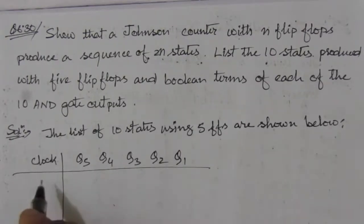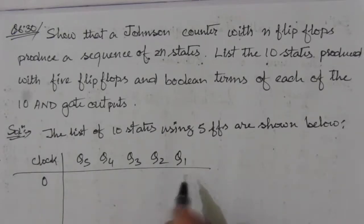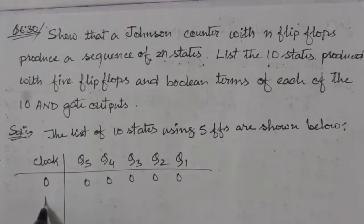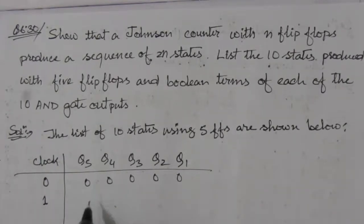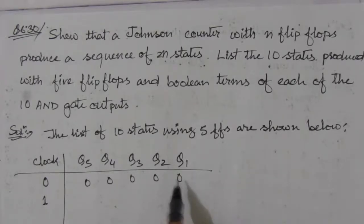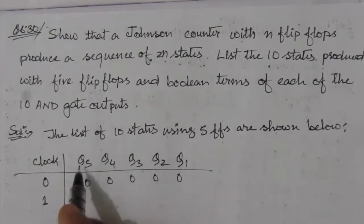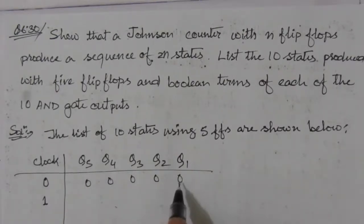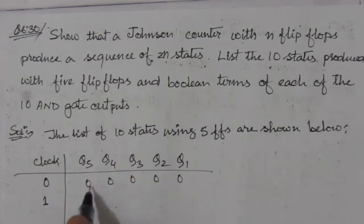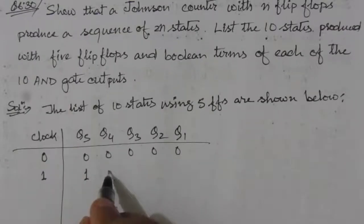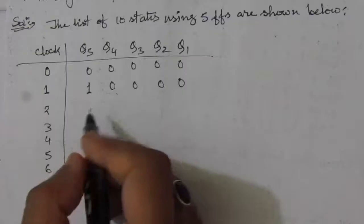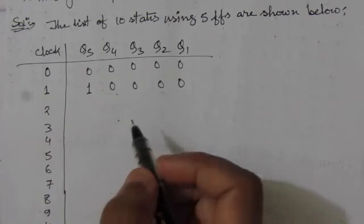We'll apply clock signals. Suppose there is no clock signal and all flip-flops are reset, so we have 00000. On the first clock signal, the complemented output of the last flip-flop is fed back to the input of the leftmost flip-flop. Since the output is zero, the complement is one, so one enters the leftmost stage and the bits shift right.